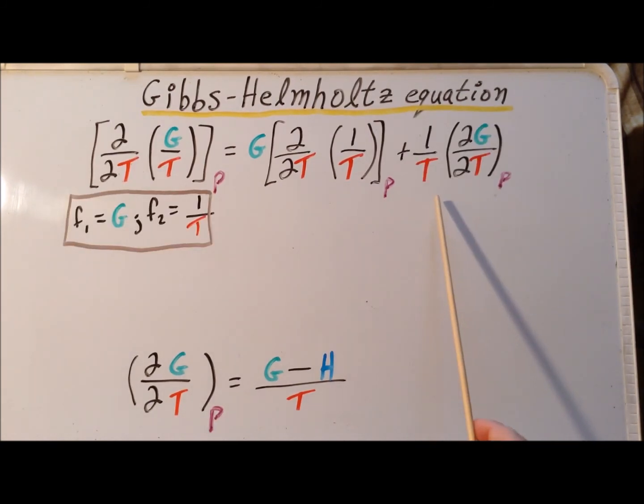Then the second part of our derivative is the second function, F2, 1 over T times the derivative of the first function, F1. So our total derivative here is G times the partial with respect to T of 1 over T plus 1 over T times the partial of G with respect to T, again at constant pressure.